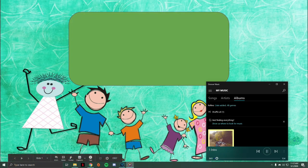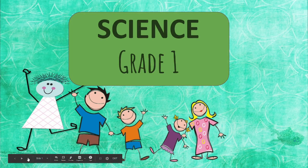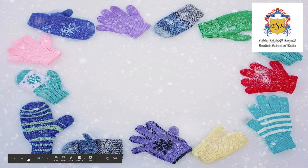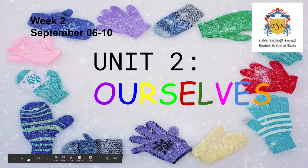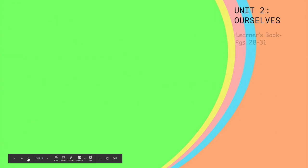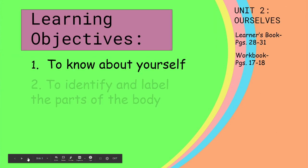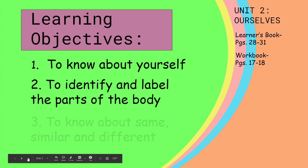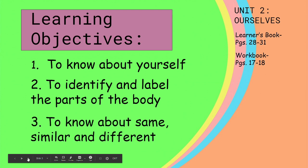Hello there students! Today we're going to study Unit 2 ourselves. Our learning objectives are: to know about yourself, to identify and label the parts of the body, and to know why humans are the same, similar, and different.